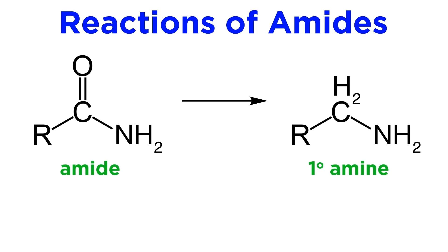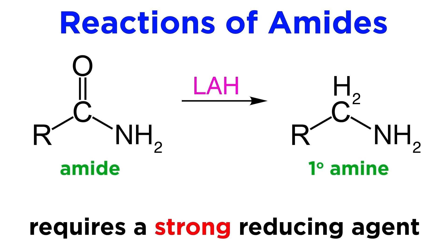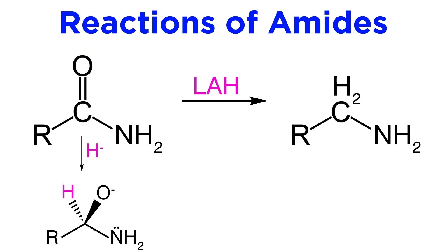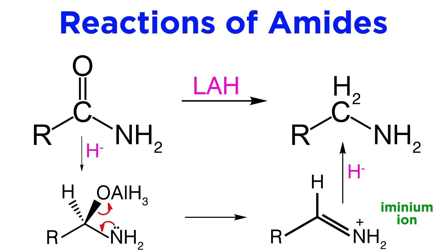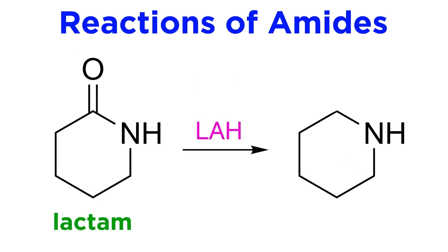Much like other carbonyl-containing compounds, amides can be reduced. Treatment of amides with strong reducing agents like lithium aluminum hydride will produce the corresponding amine by reduction of the carbonyl into a mere methylene group, removing the oxygen entirely. This happens because the hydride reduces the carbonyl to the oxyanion, which coordinates to AlH3, then the lone pair on the nitrogen kicks this moiety off entirely, yielding the iminium ion, and then an additional hydride reduces the iminium ion to produce the amine. This is especially effective with lactams, which are cyclic amides, essentially removing the carbonyl from the ring.